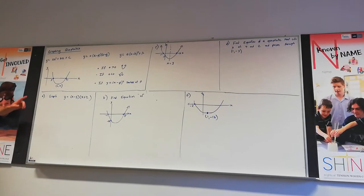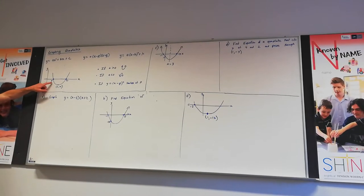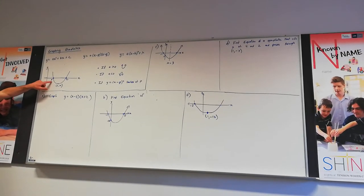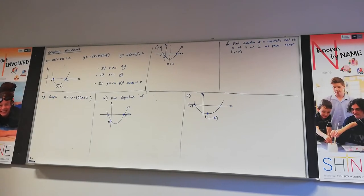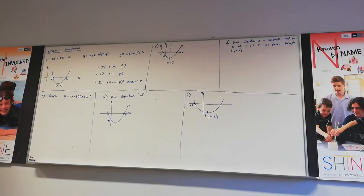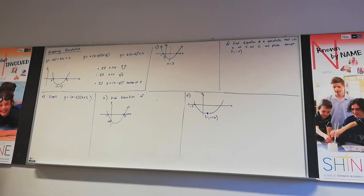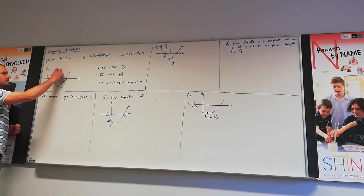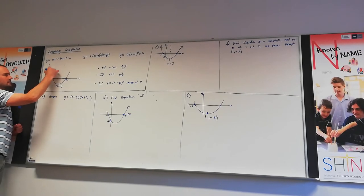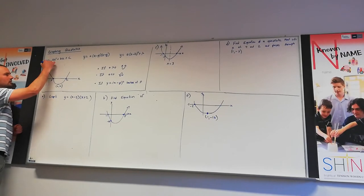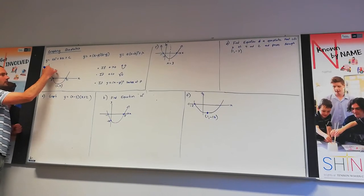The completed square form tells us the coordinates of the vertex or turning point. Here's a default quadratic — we can see we've got the roots p and q where it crosses the x-axis. I'll extend this a bit so we can see the y-intercept as well, which will come in handy a bit later.